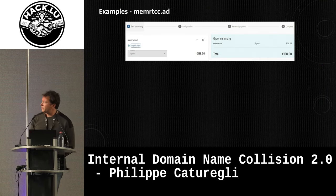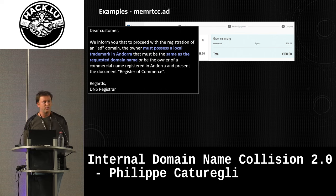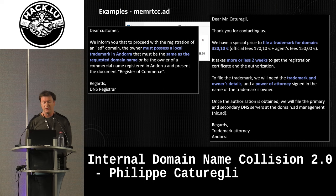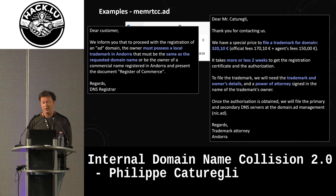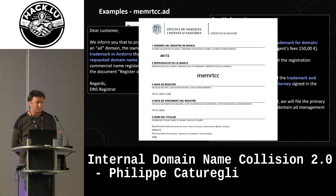So of course we registered the domain. Unfortunately, a few hours later we got an email from the registrar saying that to register a .ad domain in Andorra, you need to have a trademark. So we found a trademark lawyer in Andorra — the process seemed pretty easy: give them the trademark, your name, sign a power of attorney, pay 200–300 euros, and two weeks later you get a trademark. We didn't think it would work, but sure enough, two weeks later we got a trademark for MRTCC.AD.